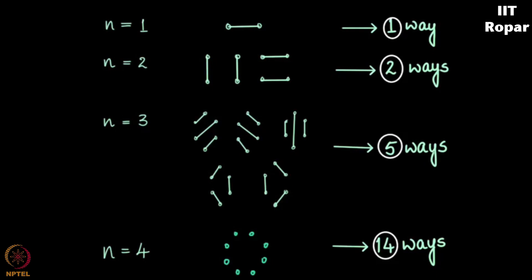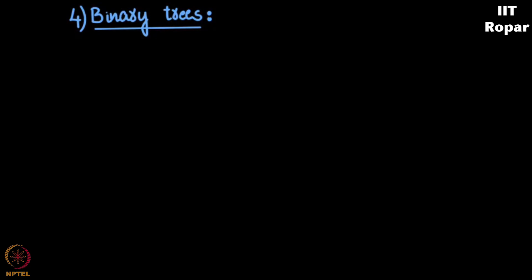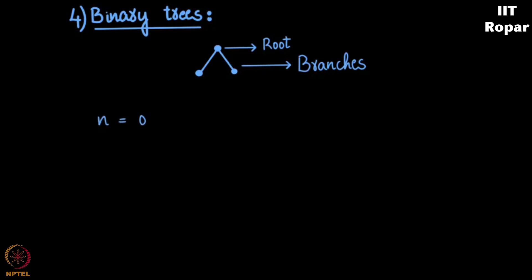The next example is binary trees. Consider a dot with some lines coming out of it connected to other dots — this is a tree. This is a root branching out into two branches, or two leaves. When n is equal to 0 we consider nodes which have two branches. When n is 0 there are no branches, only one node, and this can be done in one way.